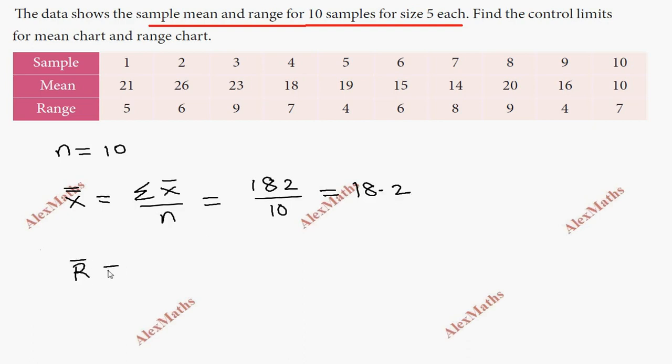Now R bar equals sigma R divided by n. Add up all the range values: 5, 6, 9, 7, and so on. You get a value of 65 divided by 10, which equals 6.5.